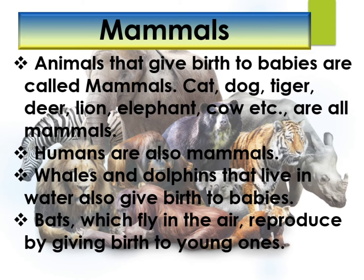Mammals — animals that give birth to babies are called mammals. Cat, dog, tiger, deer, lion, elephant, cow, etc. are all mammals. We humans are also mammals. The young ones of mammals develop in the mother's womb. After birth, the babies feed on the mother's milk till they learn to feed themselves.